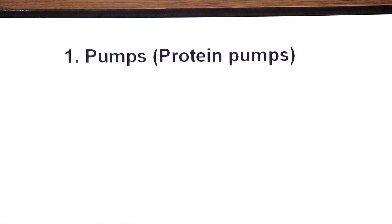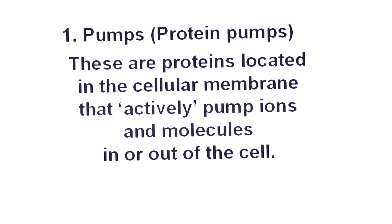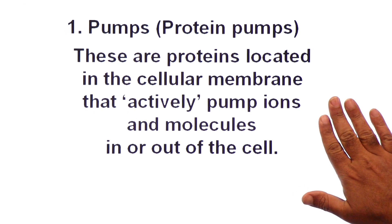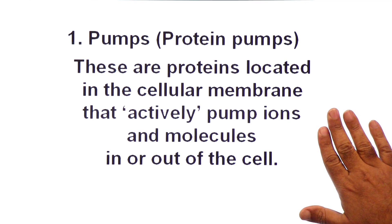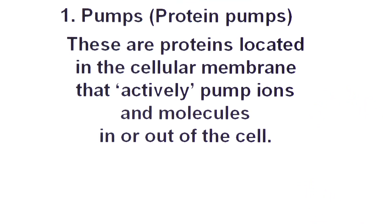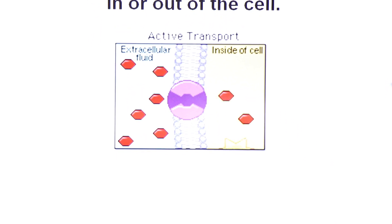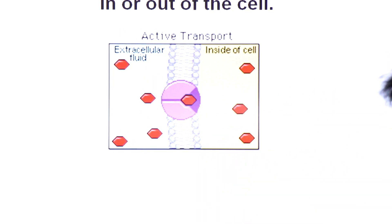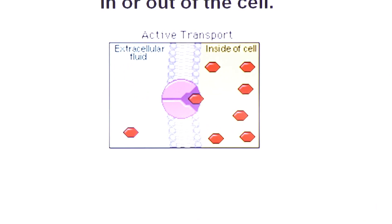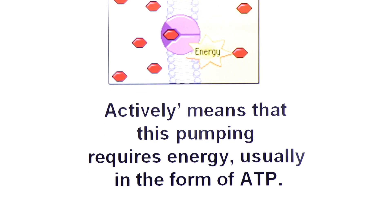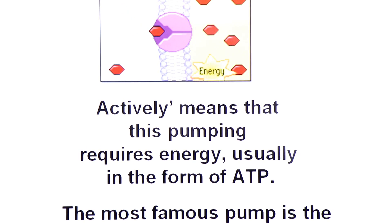The first example is pumps, also called protein pumps. These are proteins located in the cell membrane that actively pump ions from lower concentration to higher concentration, and molecules in or out of the cell. This pumping requires energy, usually in the form of ATP — the energy from ATP's phosphate bond is used.